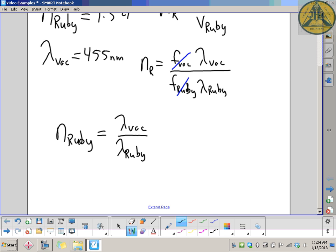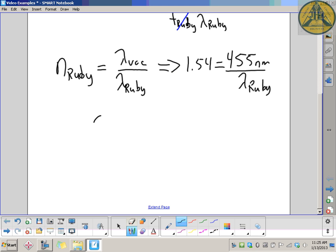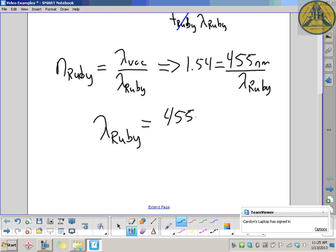Now we can very quickly calculate this. The units given were nanometers—it doesn't matter, we can keep them. The index of refraction has no units. So, 1.54 equals wavelength in the vacuum, 455 nanometers, over the wavelength in ruby. Cross-multiplying and dividing both sides: wavelength in vacuum divided by the index of refraction...